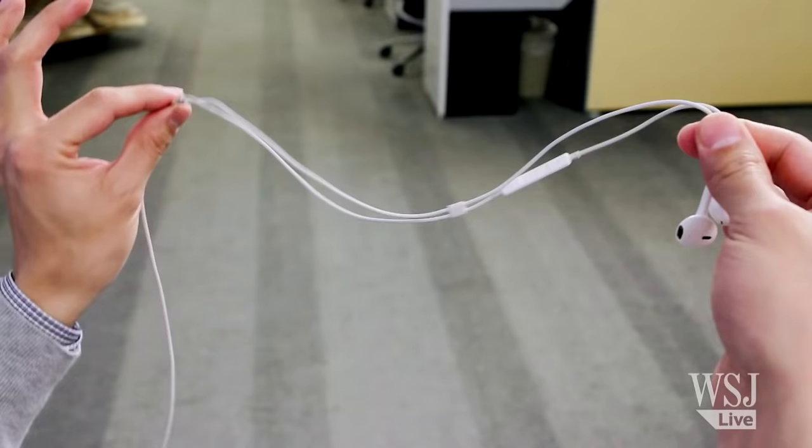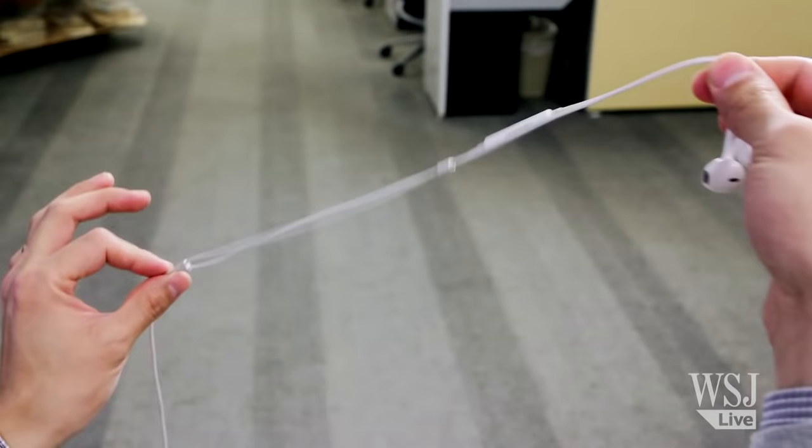Step two, you want to twist the cord forward with your left fingers like that, and it'll make it form a natural coil which you grab with your right hand.